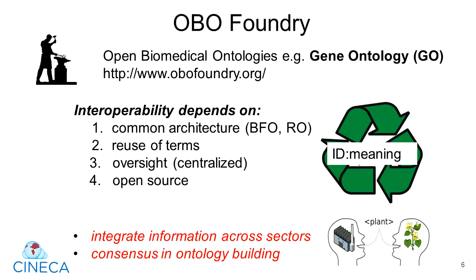If you need to describe things like symptoms, we recommend using the Human Phenotype Ontology, better known as the HPO. And of course, if you're a CINECA researcher and need to describe genomics data, we recommend using GECKO, the Genomics Cohorts Knowledge Ontology.